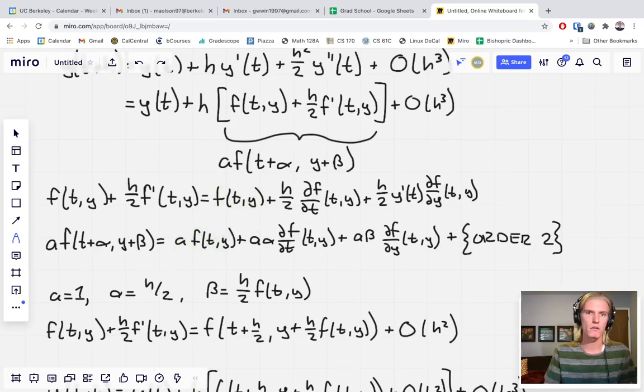Next, we have that a is one. We want to match this term to this term. And so really alpha is kind of set already. We see that alpha must be h over two. And so that's what we set right here.